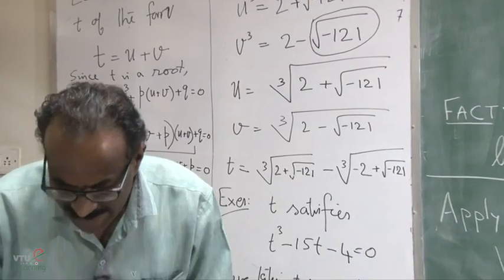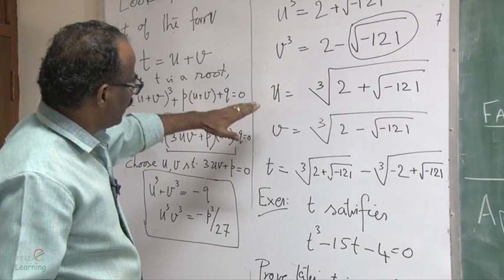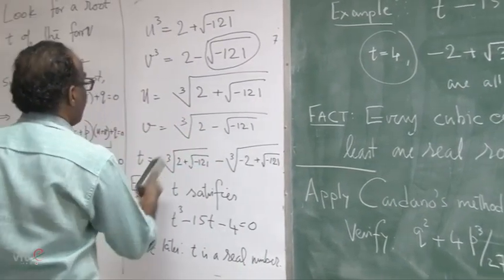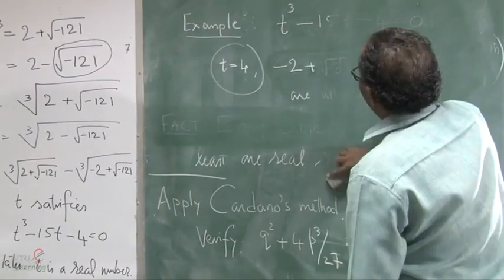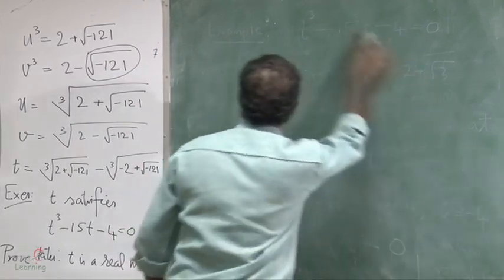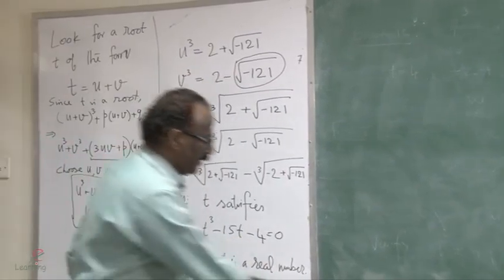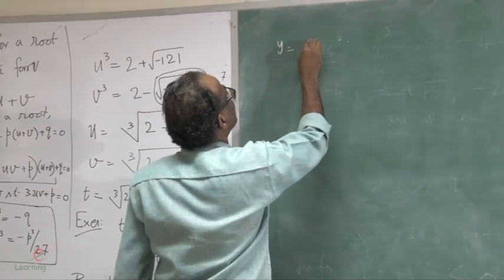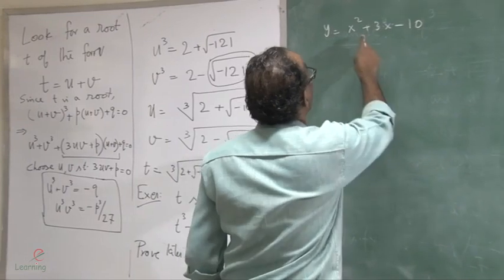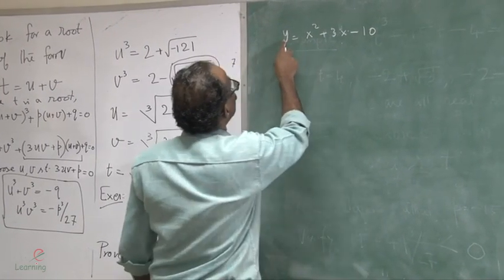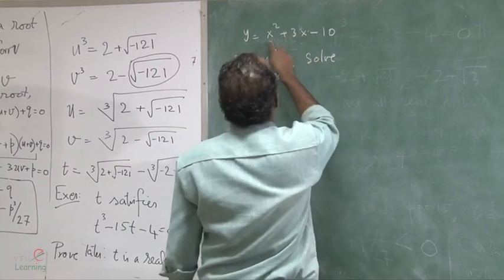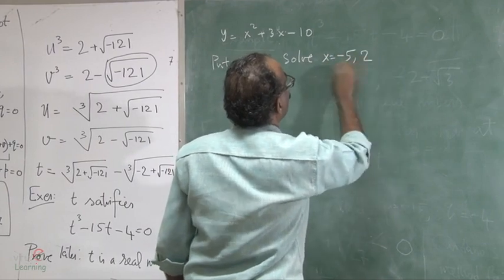We will not pursue Cardano's method further, but students should read additional material on it. Let me show one more interesting application. Consider the parabola x squared plus 3x minus 10. How does this parabola look? Setting y equal to zero and solving, the roots are x equal to minus 5 and x equal to 2.